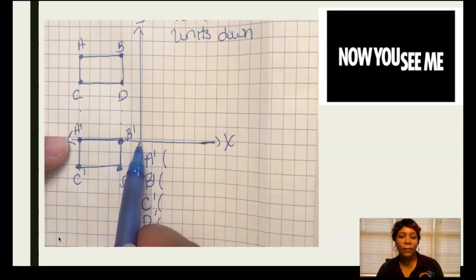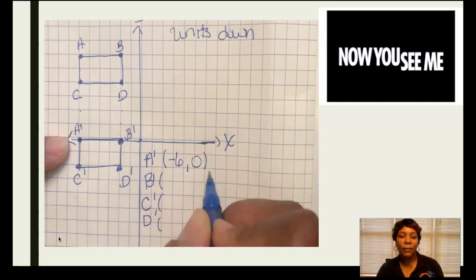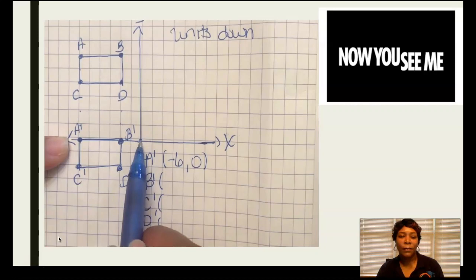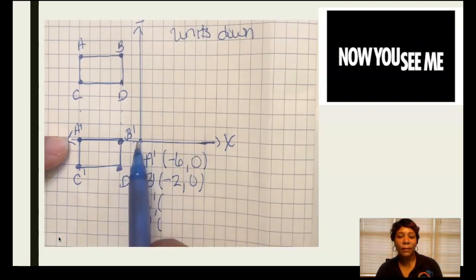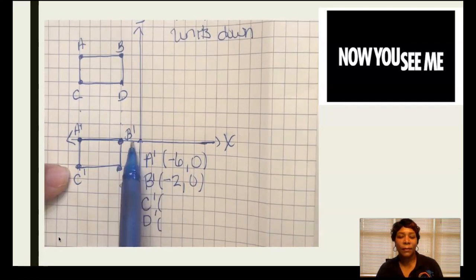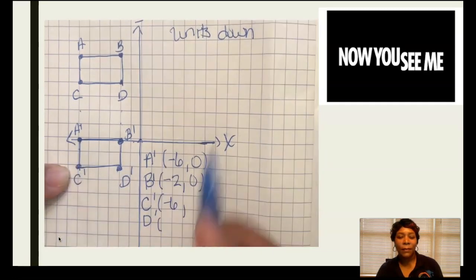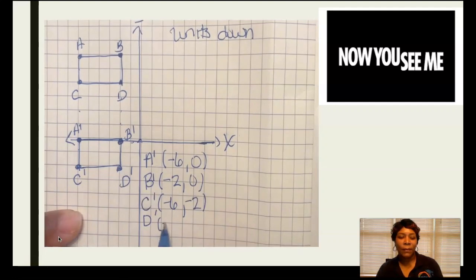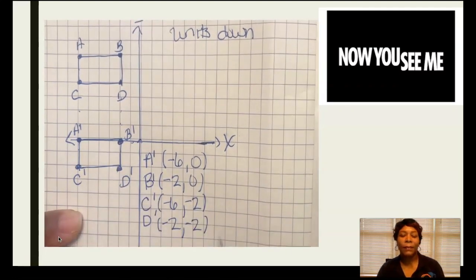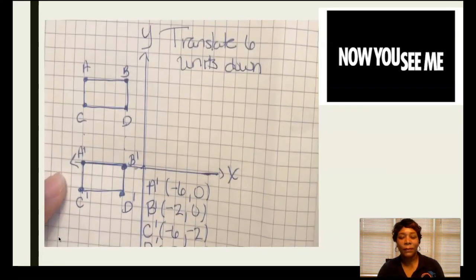Let's find the ordered pairs. A Prime: going left to negative six, not up or down, so A Prime is (-6, 0). B Prime is (-2, 0). C Prime: x is negative six, then down two, so C Prime is (-6, -2). D Prime is (-1, -2) — wait, going left one and down two — so D Prime is (-1, -2). Those are my coordinates, my ordered pairs for my image based on my pre-image.